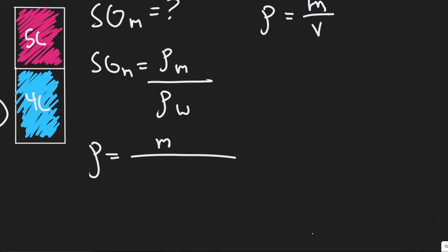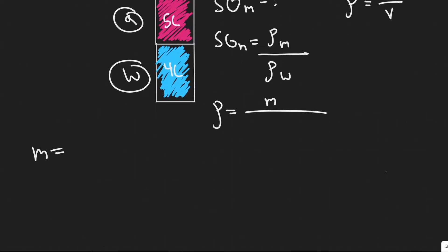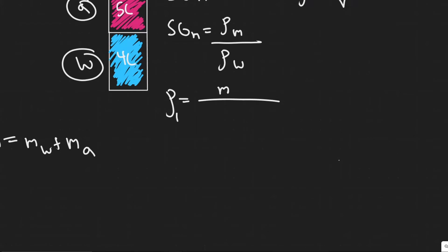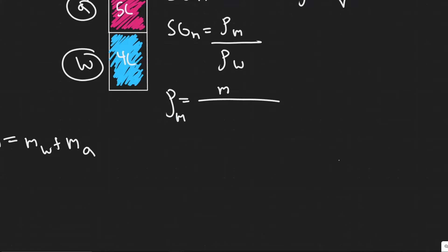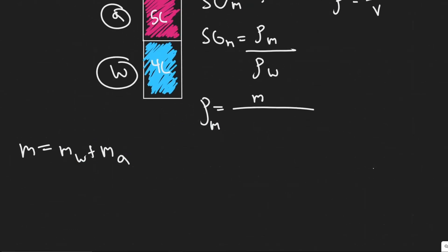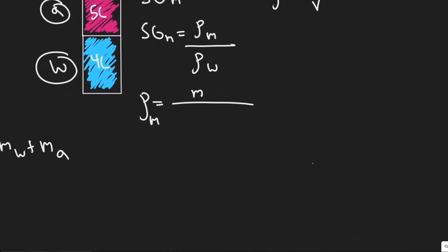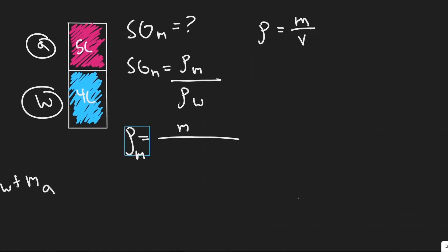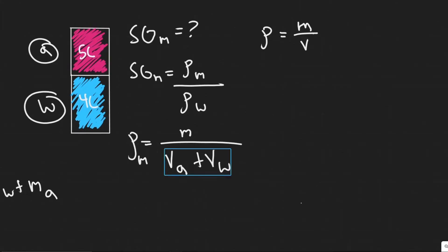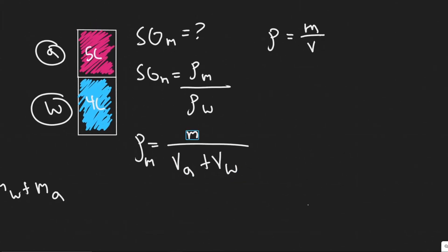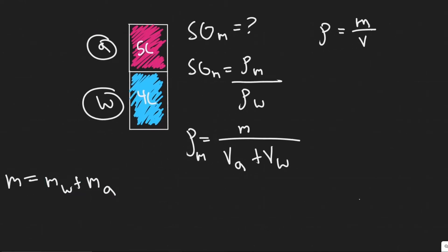Let M stand for the mass of the water and the mass of the antifreeze solution, because we're trying to find ρ_M, the density of the mixture. Density equals mass, so it's the whole mixture — we add them both up: the mass of the water and the mass of the antifreeze. Then it equals mass over volume, so this would be the volume of the antifreeze plus the volume of the water. We know the volumes but not the masses, so that's what we need to solve for now.